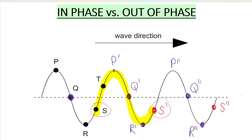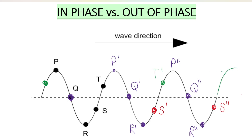Let's do our last one, which is T. The way I see T is it's just before you hit the crest. So this point would be in phase with T — just before you hit the crest. The next one in phase would be here: just before you go up to hit the crest. I can't even find the next one because this picture is not complete — it would be somewhere over here, just before you hit the crest.